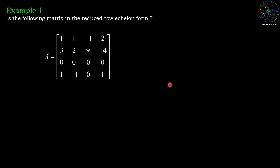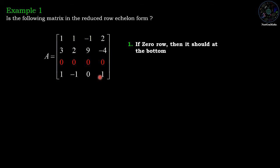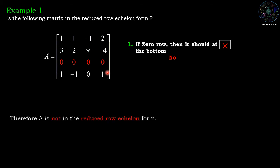Now for the examples — we check whether the following matrices are in reduced row echelon form, one condition at a time. Example one: first condition — the zero row should be at the bottom. But there is a nonzero row below the zero row, therefore it does not satisfy the first condition, and hence the matrix is not in reduced row echelon form.